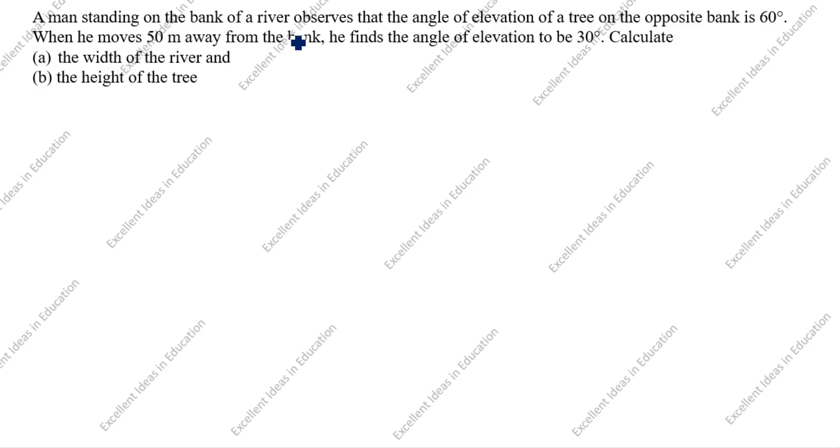A man standing on the bank of a river observes that the angle of elevation of a tree on the opposite bank is 60 degrees. Now we will draw the drawing. The angle of elevation to the tree on the opposite bank is 60 degrees.